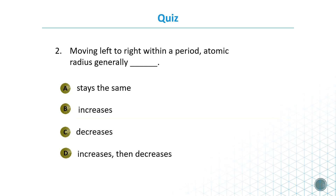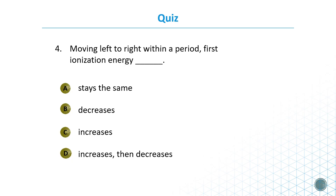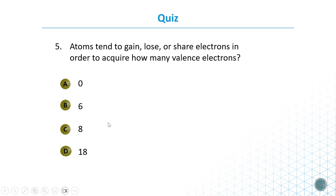Let's quiz ourselves. Moving left to right within a period, atomic radius generally decreases. Moving down within a group, atomic radius generally increases. Going from left to right, the ionization energy increases. Atoms tend to gain, lose, or share electrons to acquire eight valence electrons — this is the octet rule.